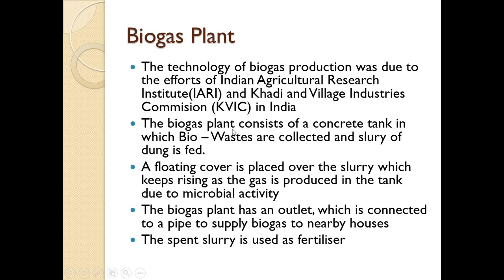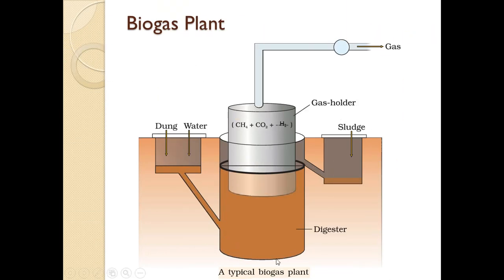In a biogas plant, the structure consists of a concrete tank about 10 to 15 feet deep. This is a picture of a biogas plant showing this concrete tank with an inlet through which the slurry is fed. The slurry consists of biowaste, dung, and water. Biowaste can include agriculture waste, sewage, manure, food waste, and kitchen waste — all mixed with dung and water and fed through the inlet.